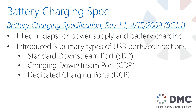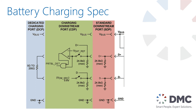In 2009, the USB foundation released the battery charging specification. This spec filled in gaps for power supply and battery charging that were not present in the original spec, and primarily introduced three different types of ports: the standard downstream port, which is what everybody's used to using as a standard USB communication port, and then a charging downstream port and a dedicated charging port. This next slide is a short summary of the different hardware configurations of these three ports from the connection side.